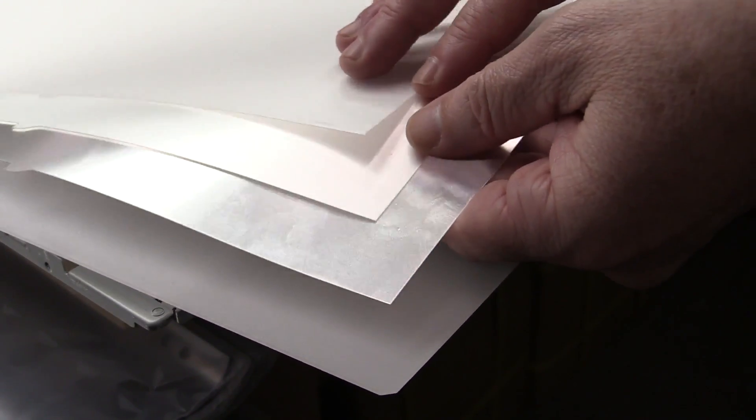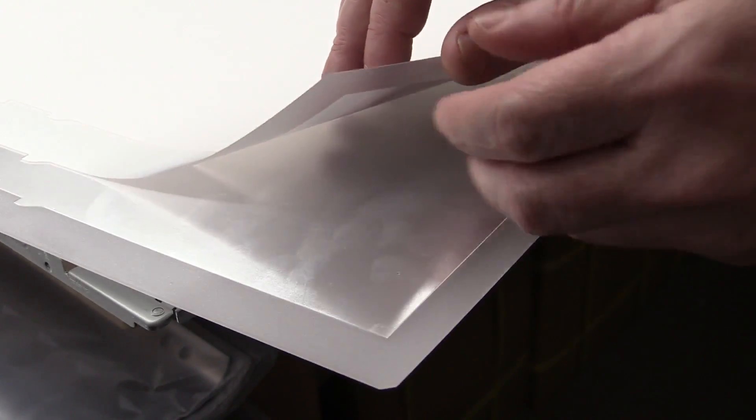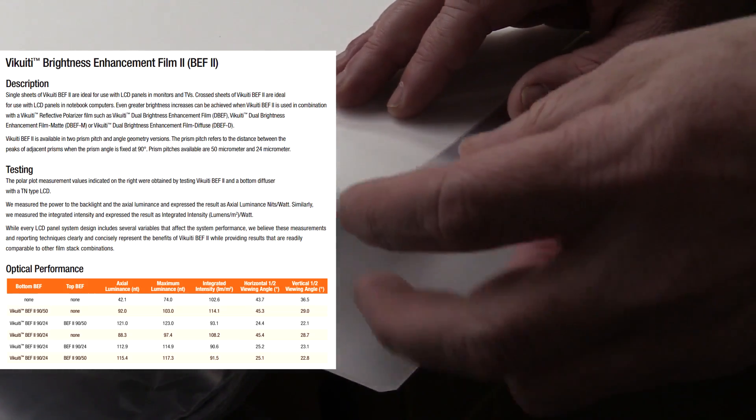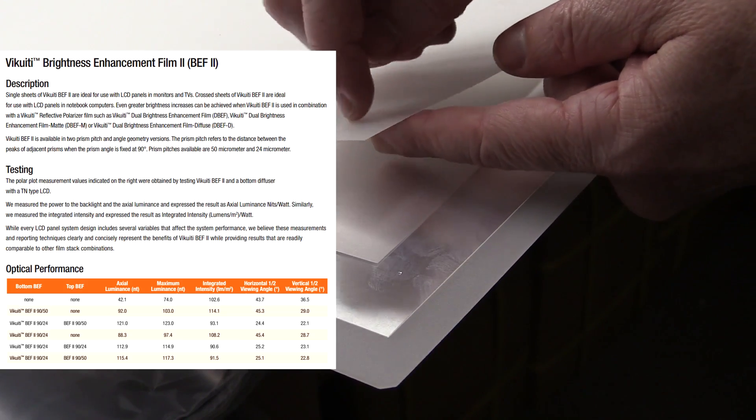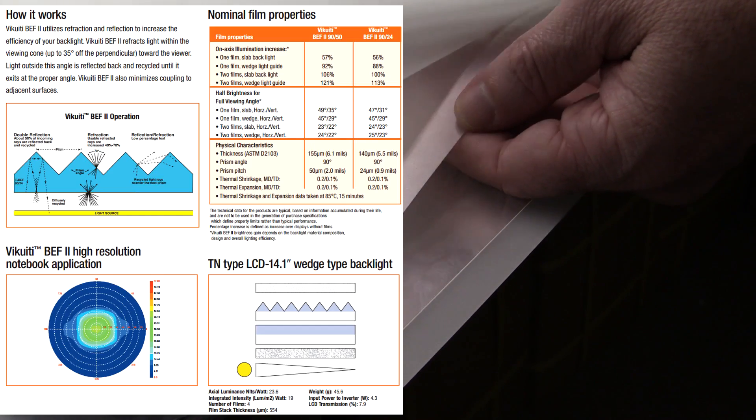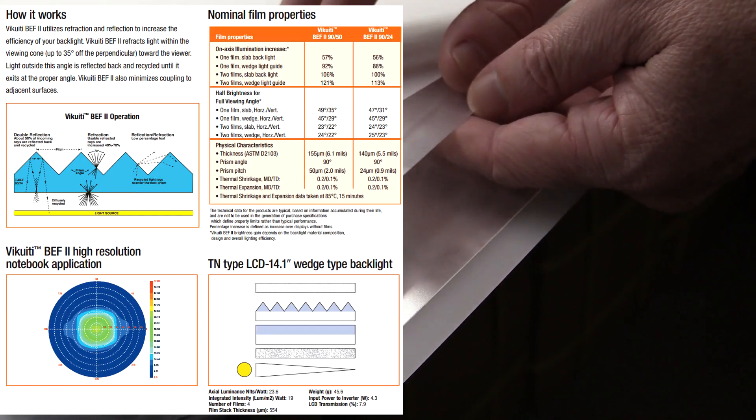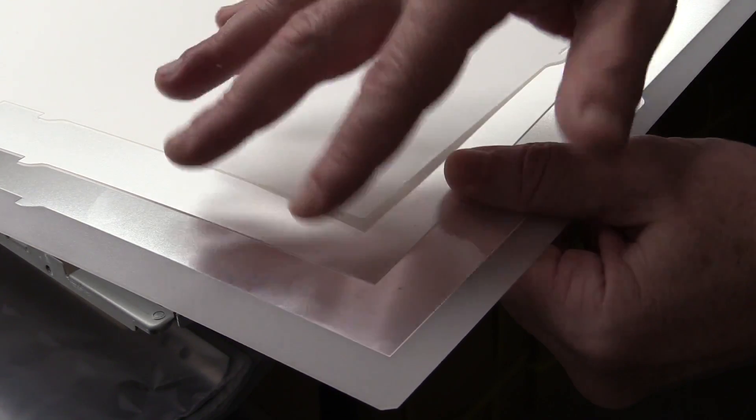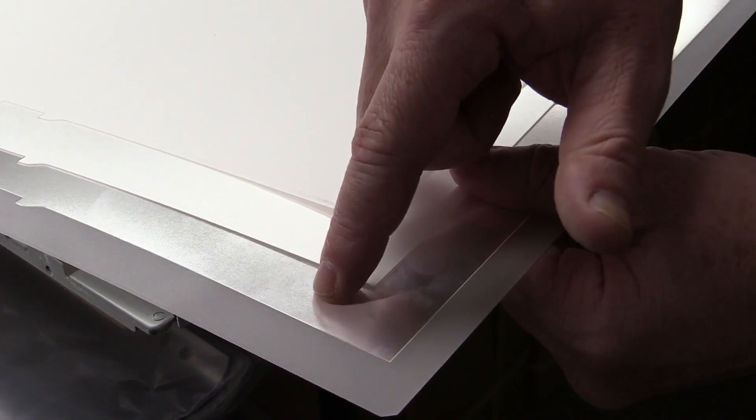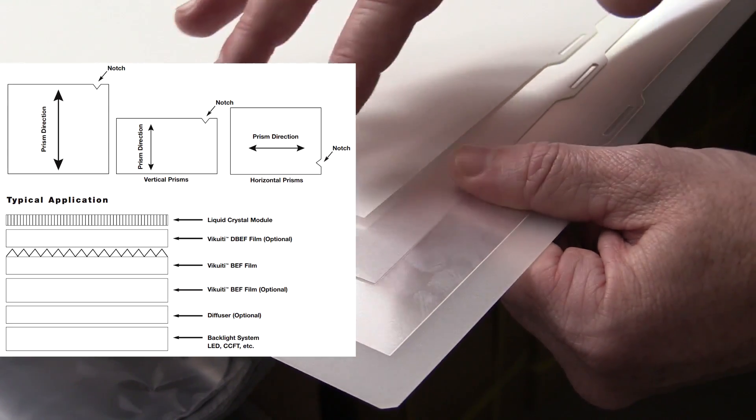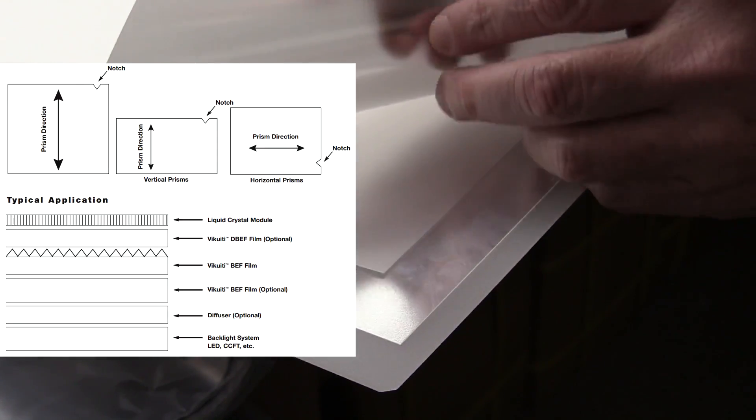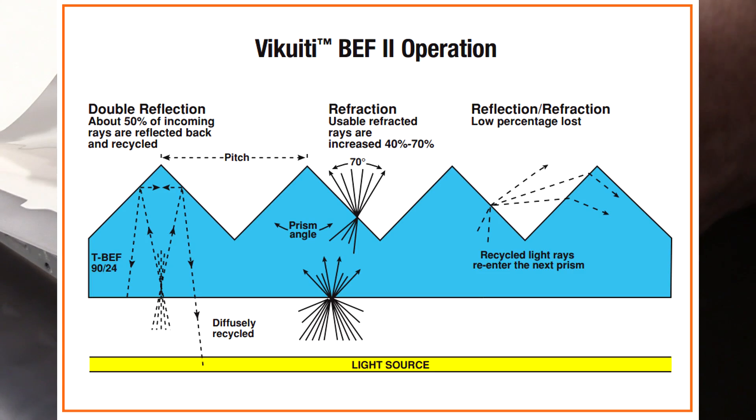But then we get onto these films, and these are absolutely fascinating and I'll link in some data sheets for these. They're made by 3M and other companies. And what they are is what they're called is prism films or brightness enhancement films. And they're actually little prisms in there, like there's millions of them. And they reflect the light, diffract it, all sorts of things. So it gives you an even surface.